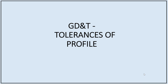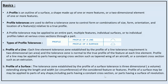Welcome to Make Minds. Today we shall discuss GD&T tolerances of profile. A profile is an outline of a surface, a shape made up of one or more features, or a two-dimensional element of one or more features. Profile tolerances are used to define a tolerance zone to control form or combinations of size, form, orientation, and location of a feature relative to a true profile. A profile tolerance may be applied to an entire part, multiple features, individual surfaces, or to individual profiles taken at various cross sections through a part.